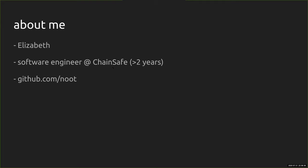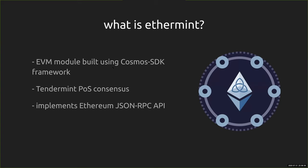So what's Ethermint? Ethermint is an EVM module built using the Cosmos SDK framework. This means it runs on Tendermint Proof-of-Stake consensus, but it is the EVM on top of it. It uses the same EVM as Go-Ethereum, so all the logic is exactly the same. Additionally, it also implements the Ethereum JSON RPC API, so you can make the usual RPC calls to Ethermint as you would with Ethereum.